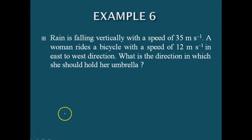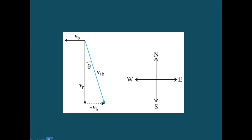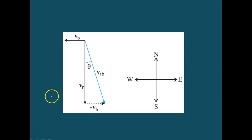We should represent this using a figure, then only we can understand how to solve this. So here, VR represents the velocity of rain.